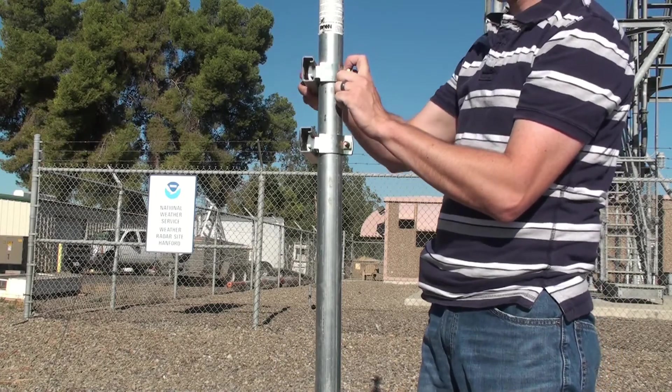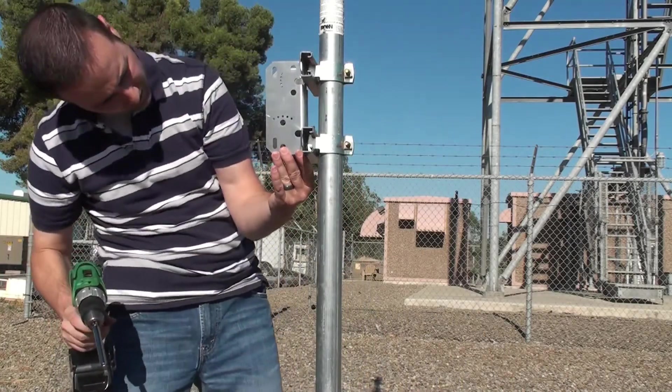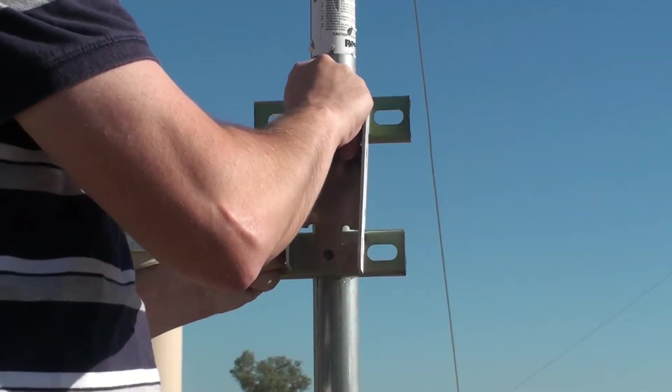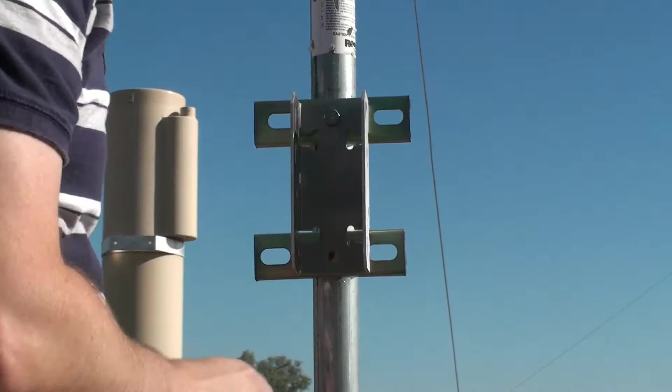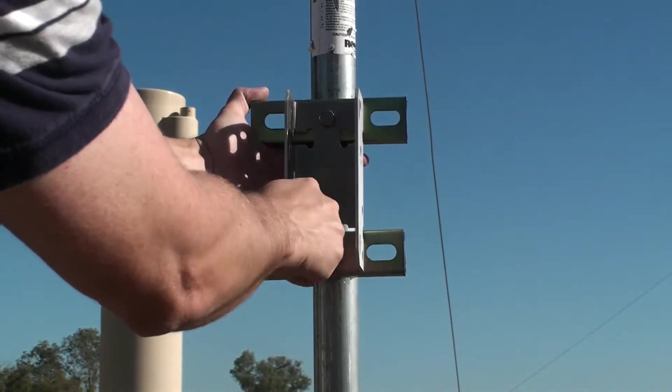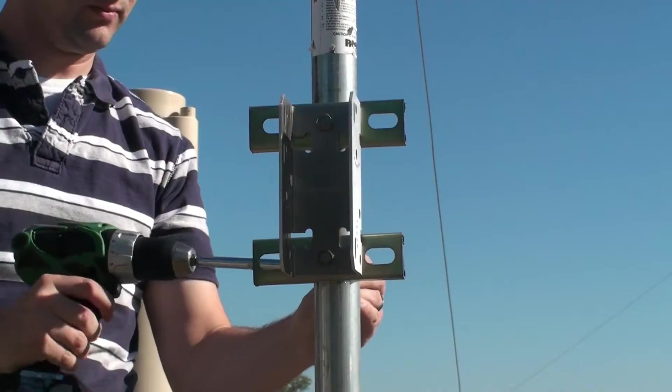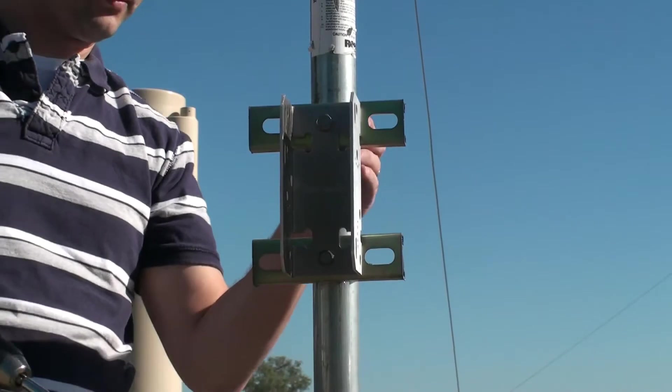Before we tighten the pipe straps, we need to ensure proper spacing by attaching the solar panel hinge mount to the cone nuts with hex bolts. Now we can tighten the straps to the mast.